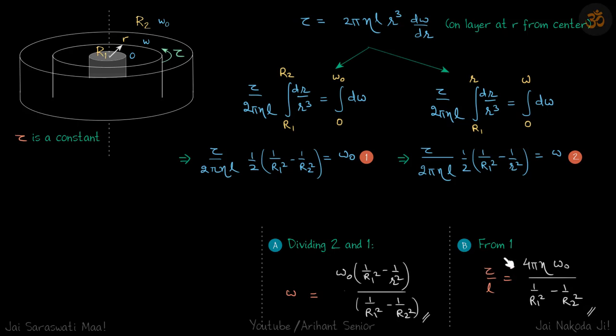So we need omega as a function of small r and we have this term tau and L which we want to get rid of. So we'll just divide equations 2 and 1 and we'll get the value of omega. And second part, they wanted torque per unit length. So from first equation, you can see there is a term tau by L. So that we can directly write to be this, which is our answer.